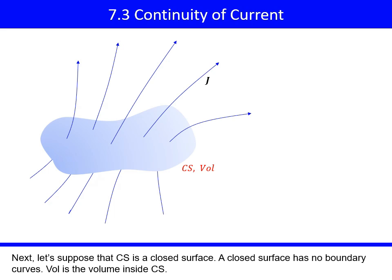Next, let's suppose that CS is a closed surface. A closed surface has no boundary curves. Vol is the volume inside CS.